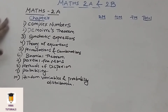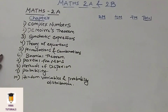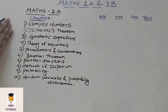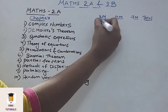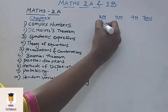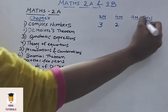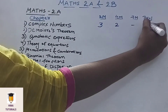In Maths 2A, there are a total of 10 chapters. Now we will see how many 2 marks, 4 marks, and 7 marks questions will come in these chapters. In Complex Numbers, we get 3 two-mark questions and 2 four-mark questions.